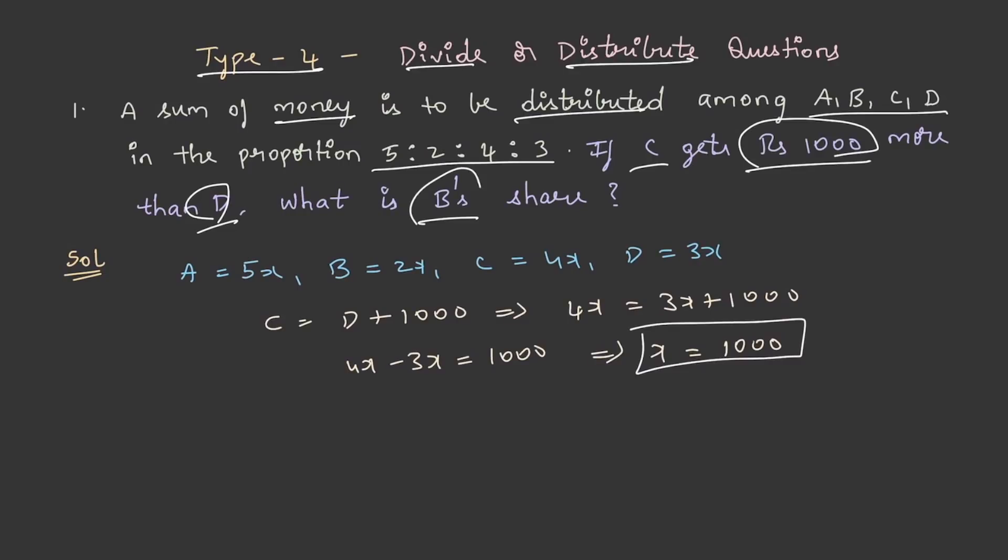So what is asking for? What is B's share? So if you know the value of x, it is easy to find the value of B's share. So B's share is equal to 2 into 1000 which is equal to rupees 2000. This is the answer.